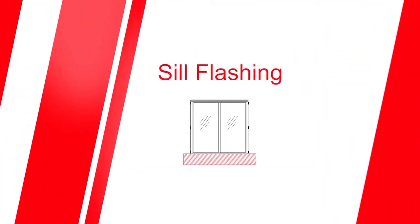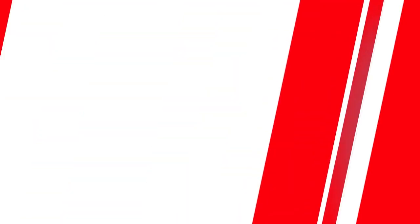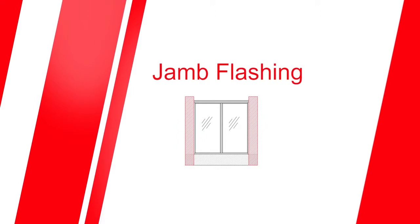The seal flashing is fitted to the bottom of the window and extends on either side at least 150 millimetres. The jam flashing should be at least 150 millimetres wide and attached to both sides of the window, starting 150 millimetres above the window and continuing down to overlap the seal flashing.